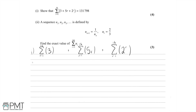Let's write out these sums to see what's going on. This first part has no r in the brackets, so all we're doing is summing 3 a total of 16 times: 3 plus 3 and so forth, 16 times. That means we have 16 lots of 3, which is 16 times 3. Putting this into a calculator, we know this sum is just 48.